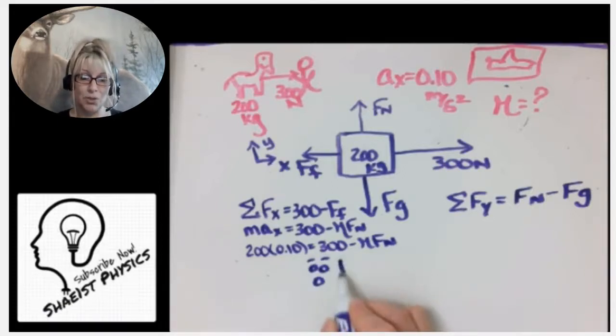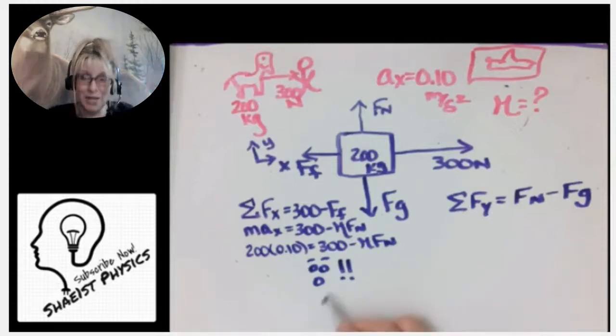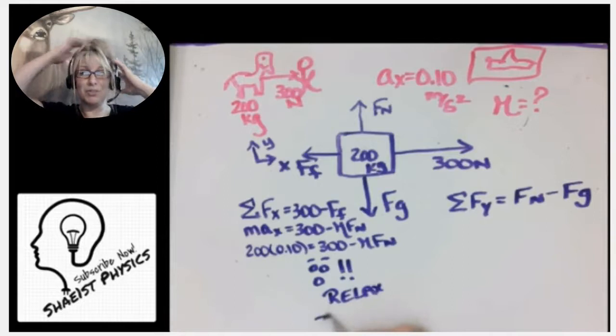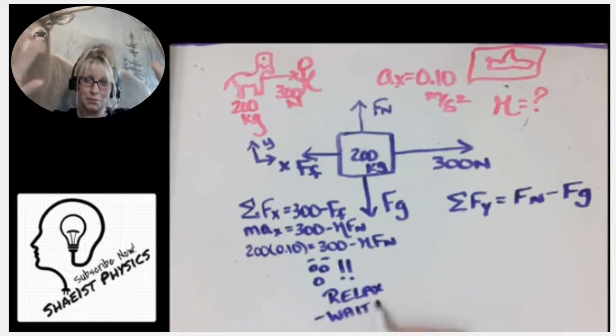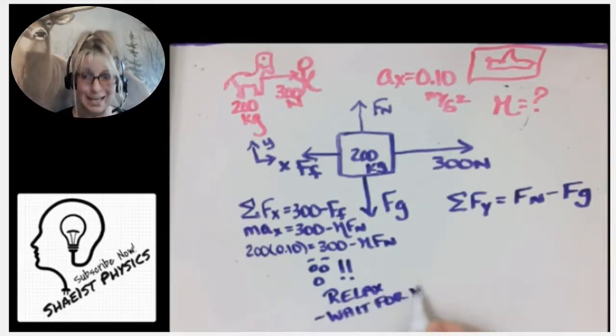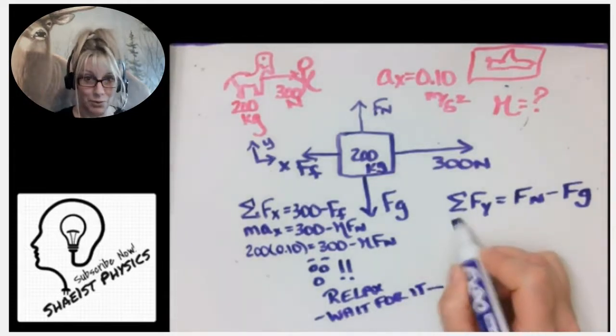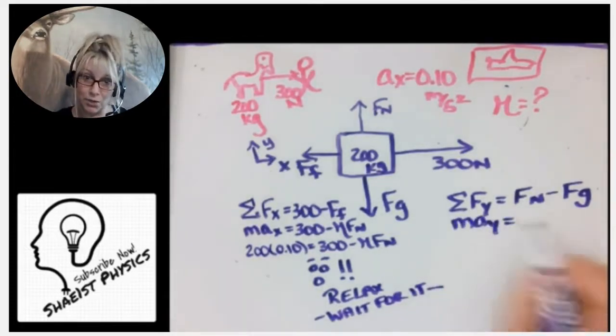And we're just going to keep substituting what we know step by step. We know the force of friction here is equivalent to coefficient of friction times normal force. Now we're just plugging in those numbers and we get to the point where we don't know mu and we don't know normal force. We freak out, and I'm going to tell you, put the brakes on it and relax. Wait for it, wait for it—we have a whole other equation to work on.